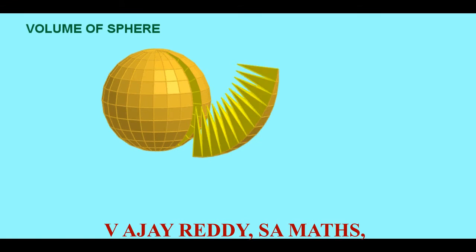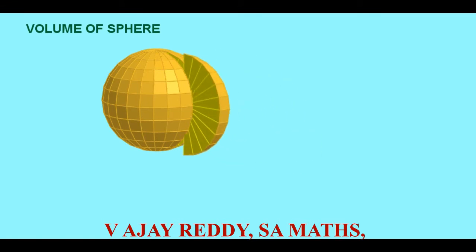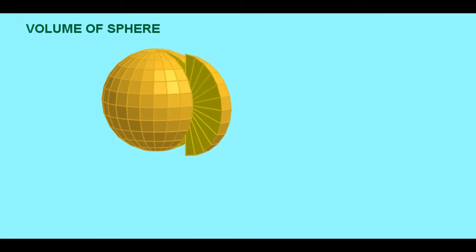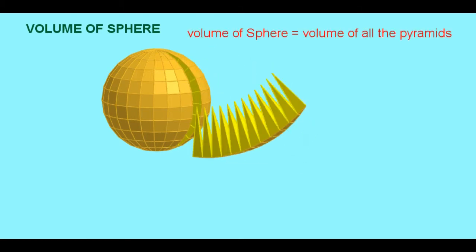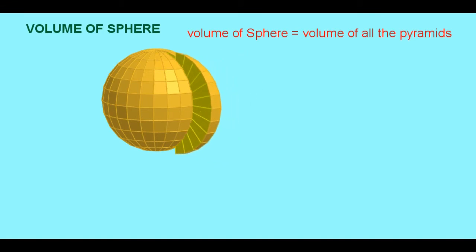Let us find the volume of sphere. Observe the sphere here. This sphere is divided into many pyramids. Now let us find the volume of this sphere. The volume of sphere is equal to volume of all the pyramids here.